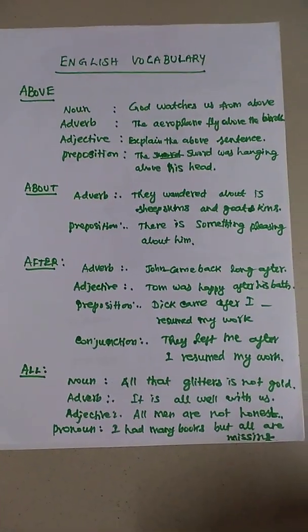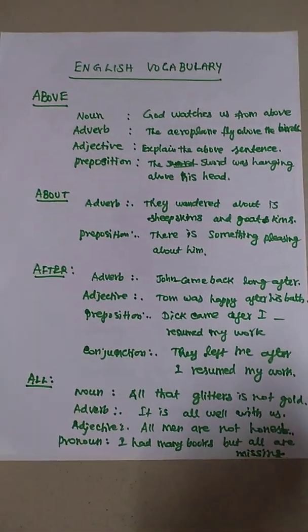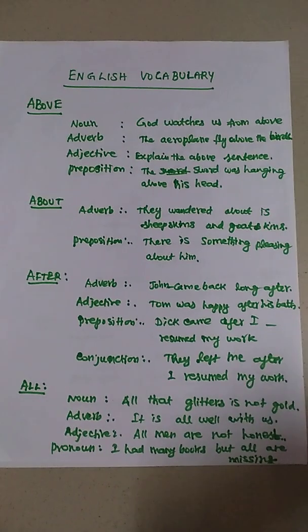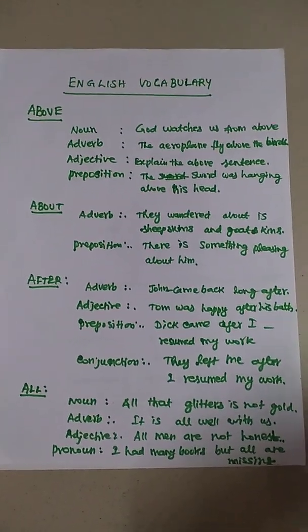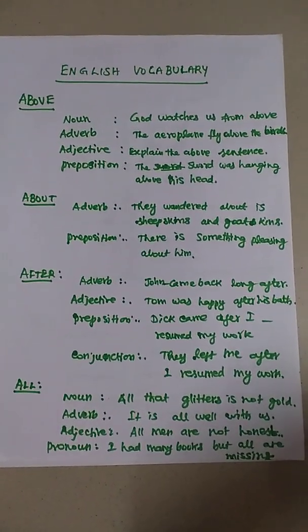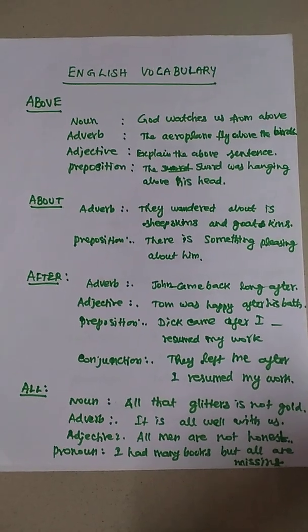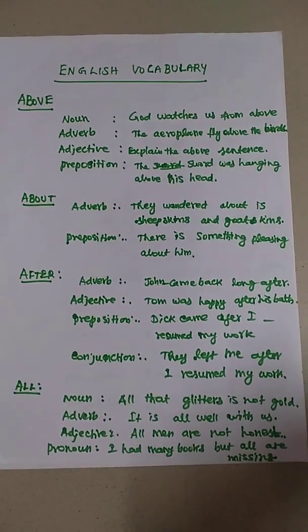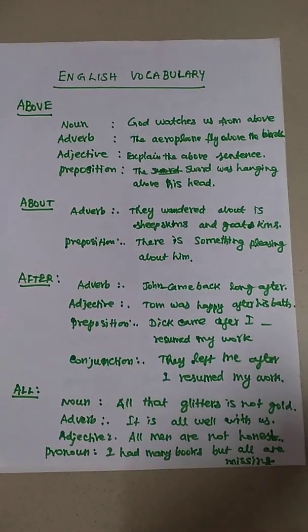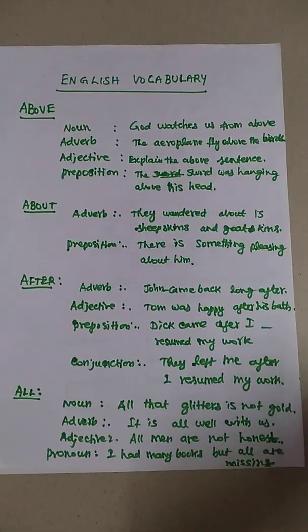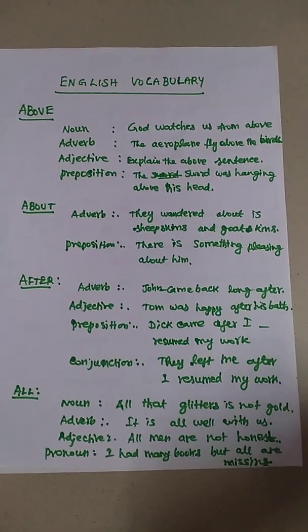The word 'above' is used as noun, adverb, adjective, and preposition. Using it as a noun, the example sentence is: 'God watches us from above.'